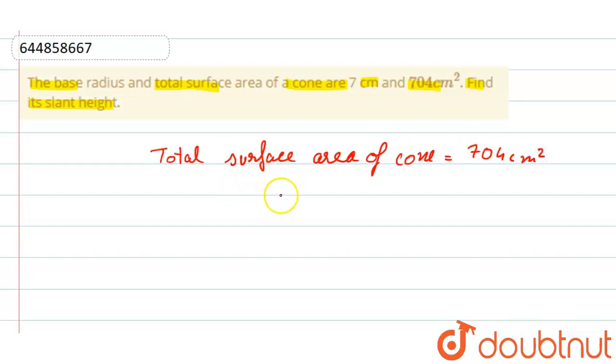So we have to find slant height. Now we know total surface area of cone that is equals to pi r into l plus r.